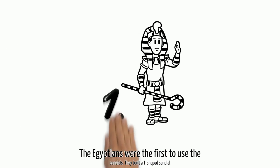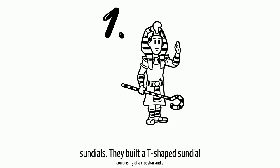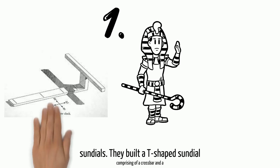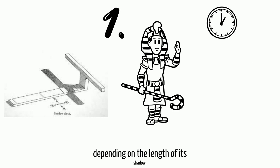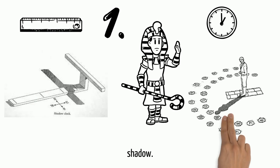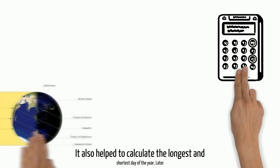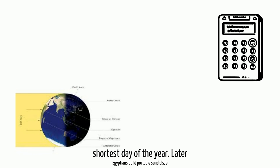The Egyptians were the first to use the sundials. They built a T-shaped sundial comprising of a crossbar and a vertical stick. Time was calculated depending on the length of its shadow. It also helped to calculate the longest and shortest day of the year.